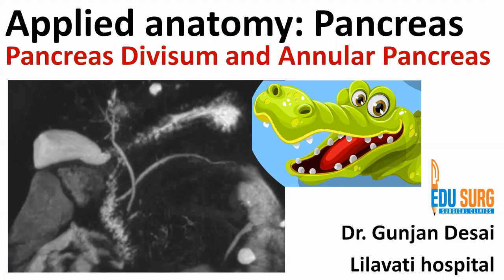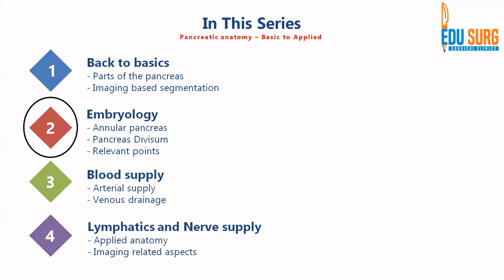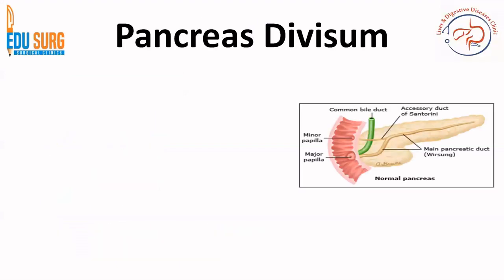Welcome back to our discussion on applied anatomy of the pancreas, focusing on embryology. Today we are going to discuss the common congenital issues that happen during the development of the pancreas. If you have not seen the previous video, please have a look at that, as we discussed the origin of the pancreas from the hepatic and dorsal mesogastrium and how the pancreatic duct is formed. This video is based on anomalies that can happen during this development.